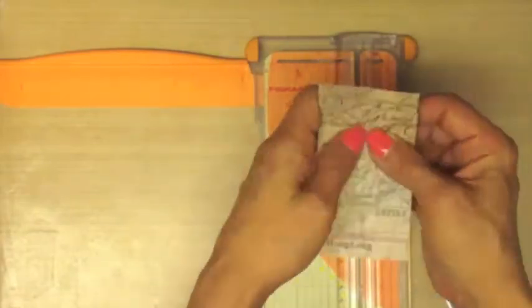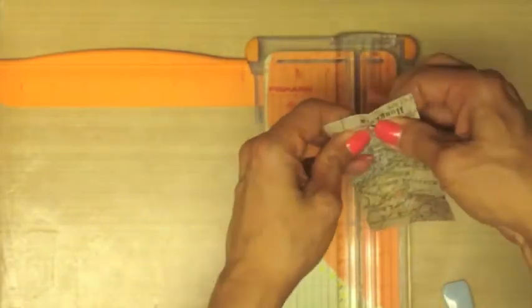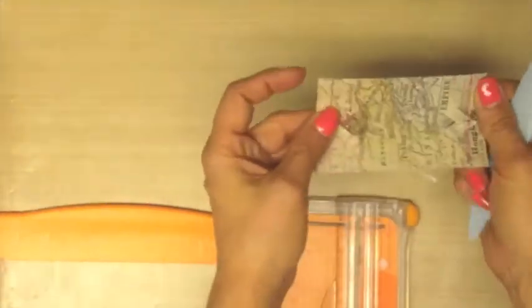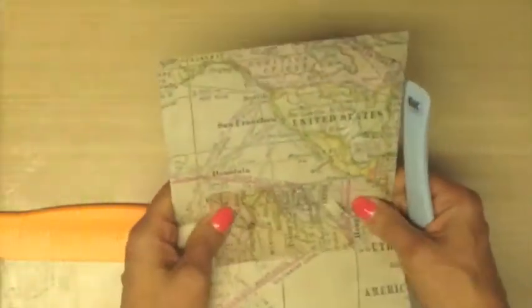Now we get to do our folds. First, pinch the little chevrons towards you and then make sure that the other score line makes it so that the right sides are together. Be sure to use your bone folder to get a nice crisp fold.